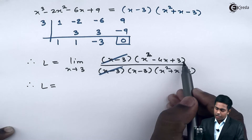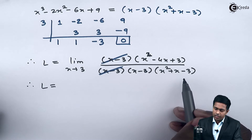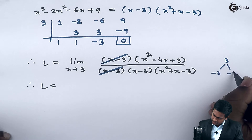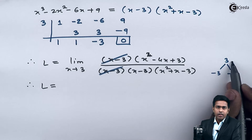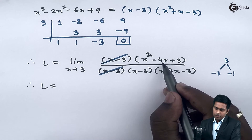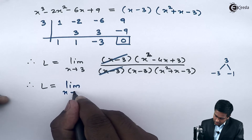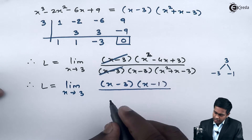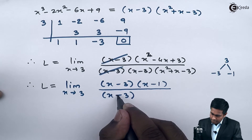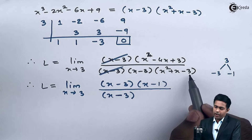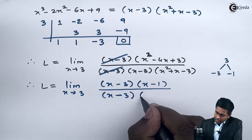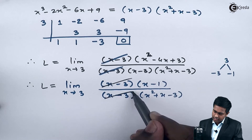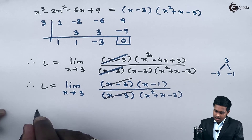After canceling one (x - 3), we have (x² - 4x + 3) in the numerator and (x - 3)(x² + x - 3) in the denominator. We factor the numerator quadratic: the last term is 3 with factors -3 and -1, since (-3)×(-1) = 3 and (-3) + (-1) = -4. So the numerator becomes (x - 3)(x - 1). We can then cancel this (x - 3) with the remaining (x - 3) in the denominator, leaving (x - 1) over (x² + x - 3).